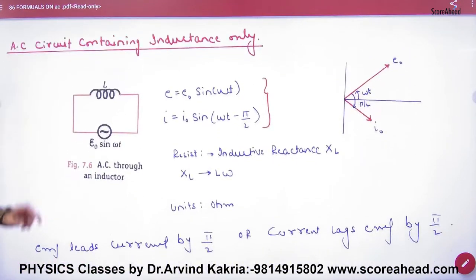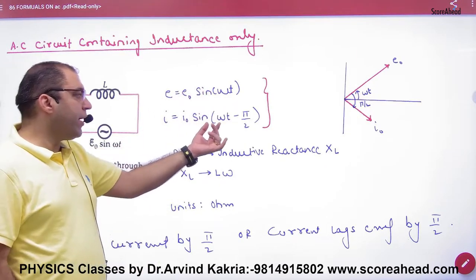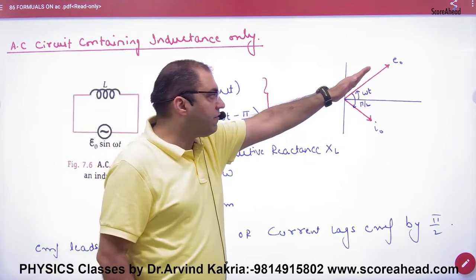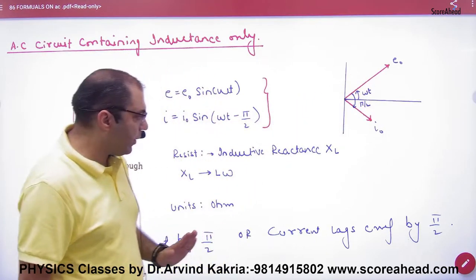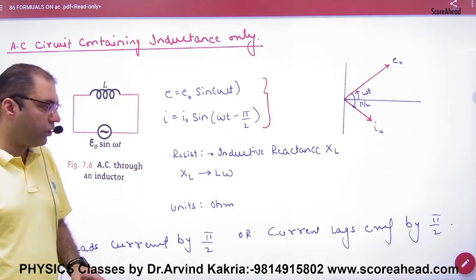In that way, the AC circuit containing inductor only, EMF E0 sin omega t, so the value of I0 sin omega t minus pi by 2. So if EMF omega t, then the current is the angle of pi by 2. And what is the resistance? Inductive reactance. And what is the value? L omega.